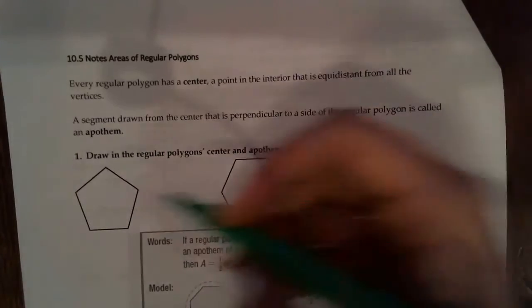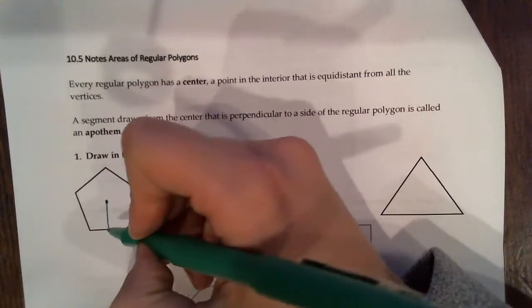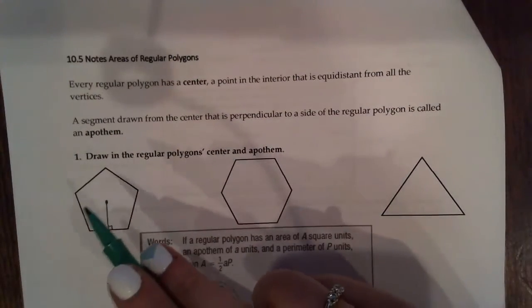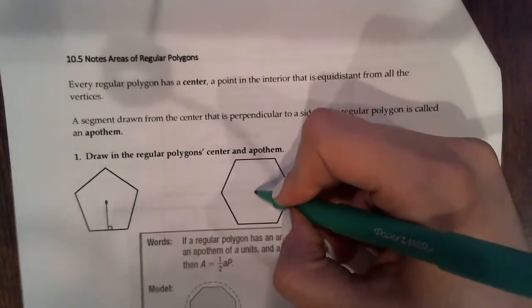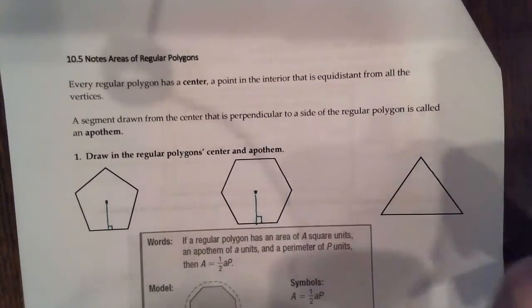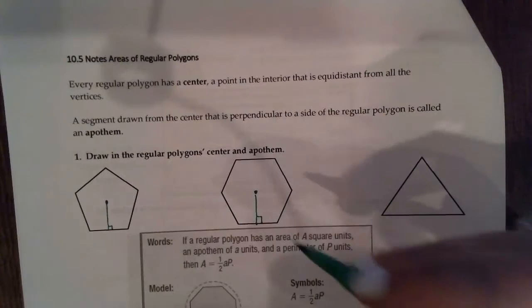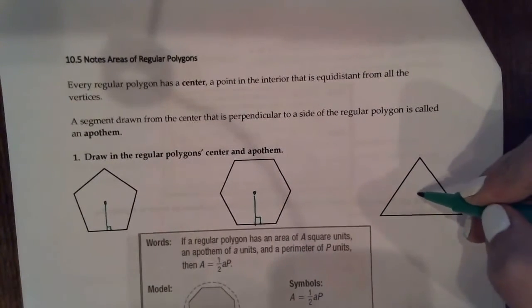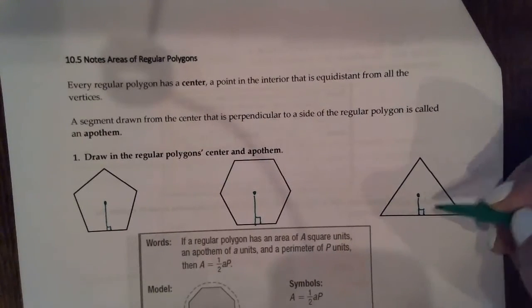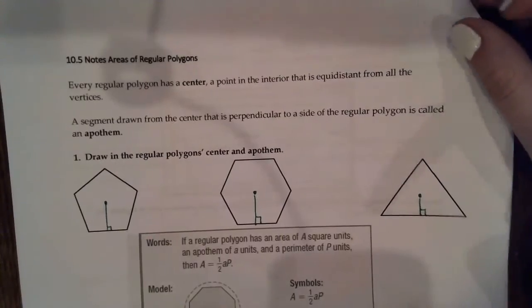So we need to go to the center and draw a line straight down and show that it's perpendicular. Here's an apothem of this pentagon. I'm going to draw another center point, draw my line down, show that it's perpendicular. This is my apothem of my hexagon. And I'm going to draw another. This is my apothem of this triangle. Awesome job, guys.